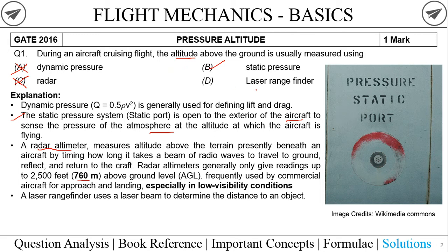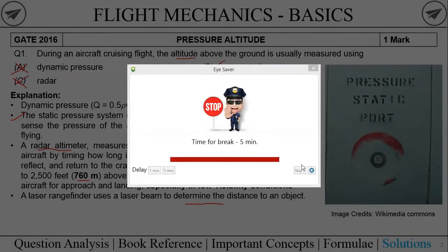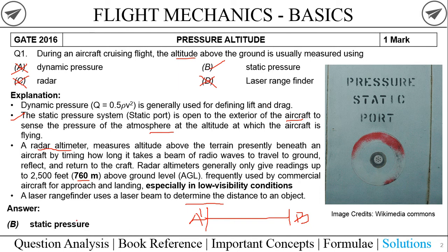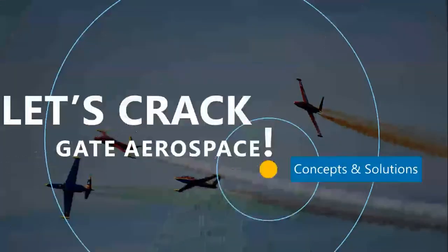Option D is a laser range finder, which is used to determine horizontal distance from one point to another. Since we require altitude — a vertical measurement — this is not the right answer. Therefore the correct answer must be static pressure. Checking the answer confirms that Option B, static pressure, is correct. That's it for this session — thank you, let's crack GATE Aerospace!